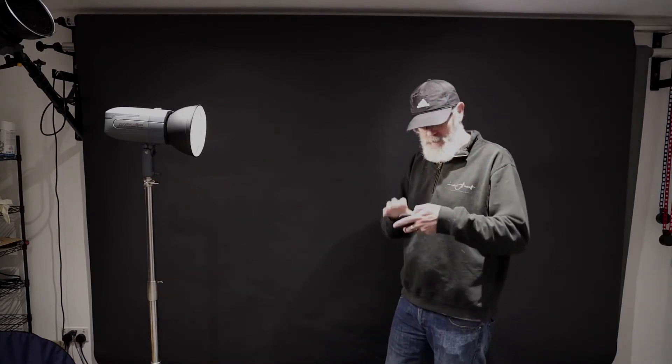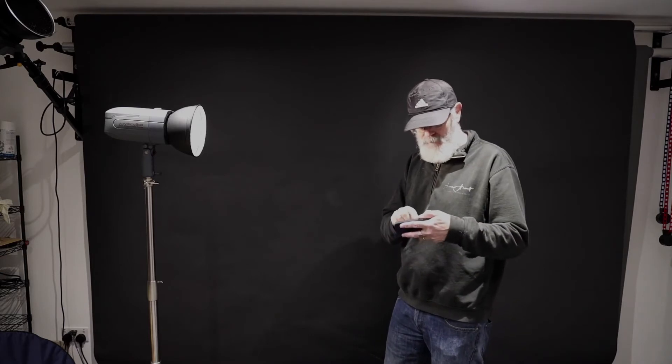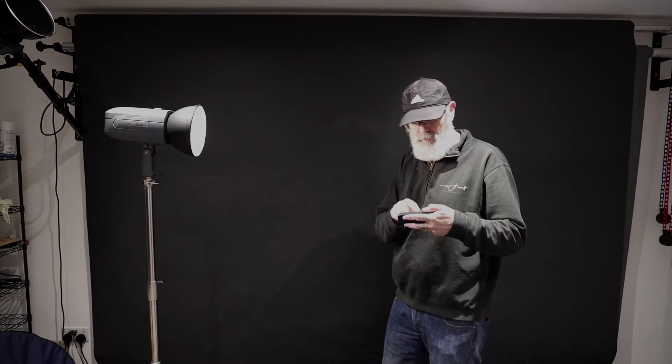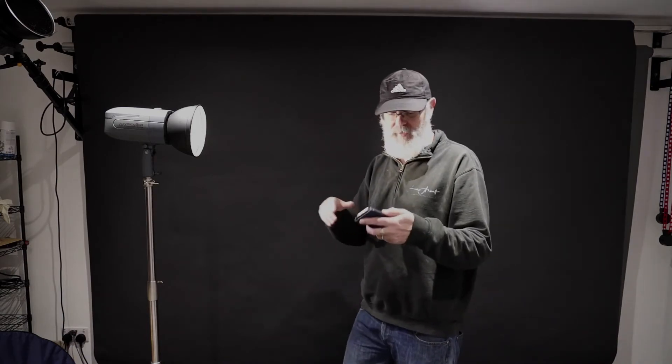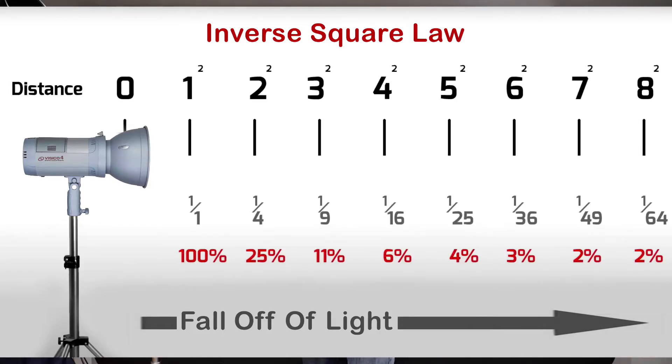You can work it out mathematically — I'll put a chart up so you can see how you get the fall off. Every time I move back, I'm now at three feet. At three feet squared I'm getting 11% of the total power of the light hitting my face. And if I went back eight feet, I'd then be getting just 2% of the light coming from the light source.